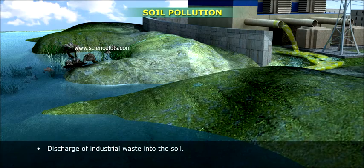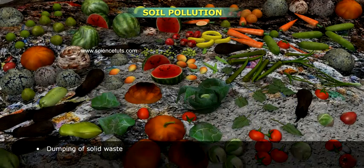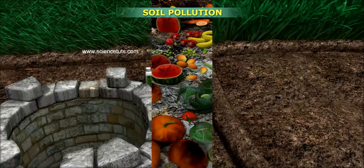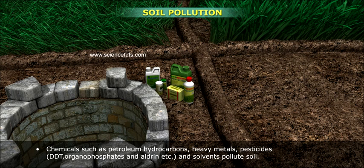Discharge of industrial waste into the soil. Percolation of contaminated water into the soil. Dumping of solid waste. Chemicals such as petroleum hydrocarbons, heavy metals, pesticides, DDT, organophosphates, and aldrin, etc., and solvents pollute soil.